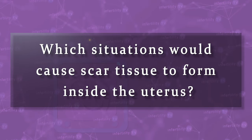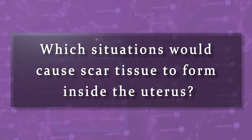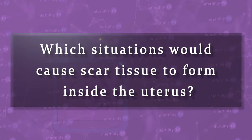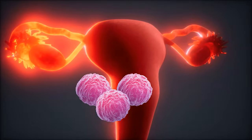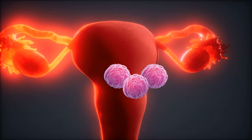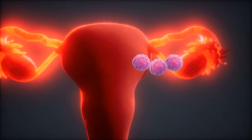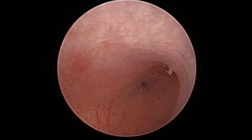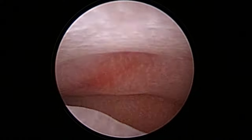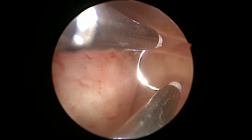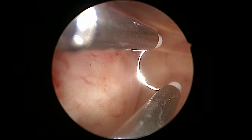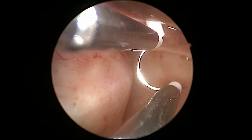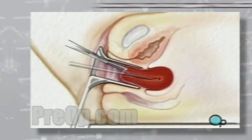Which situations would cause scar tissue to form inside the uterus? Number one, bacterial infection that affects the uterine lining. Number two, surgery performed on the inside of the uterus. For example, a procedure to remove a polyp or fibroid can result in scarring.